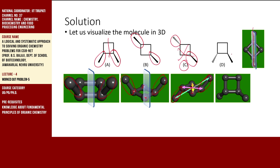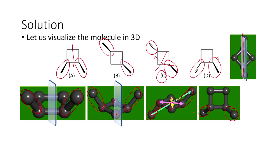In the fourth compound, one methyl group points towards the observer on the first carbon, and one methyl group points away from the observer on the second carbon. There is no object-mirror image relationship in this molecule. That is why this compound is going to be optically active. Of all four compounds, three have either a plane of symmetry or a center of symmetry. The fourth compound has no elements of symmetry — so it can be optically active. The answer is only D.